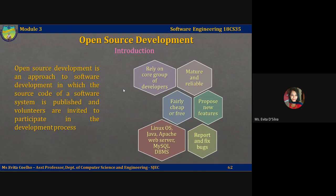The best known open source product is the Linux operating system, which is widely used as a server system and increasingly as a desktop environment. Other important open source products include Java, the Apache web server, MySQL DBMS, and so on.